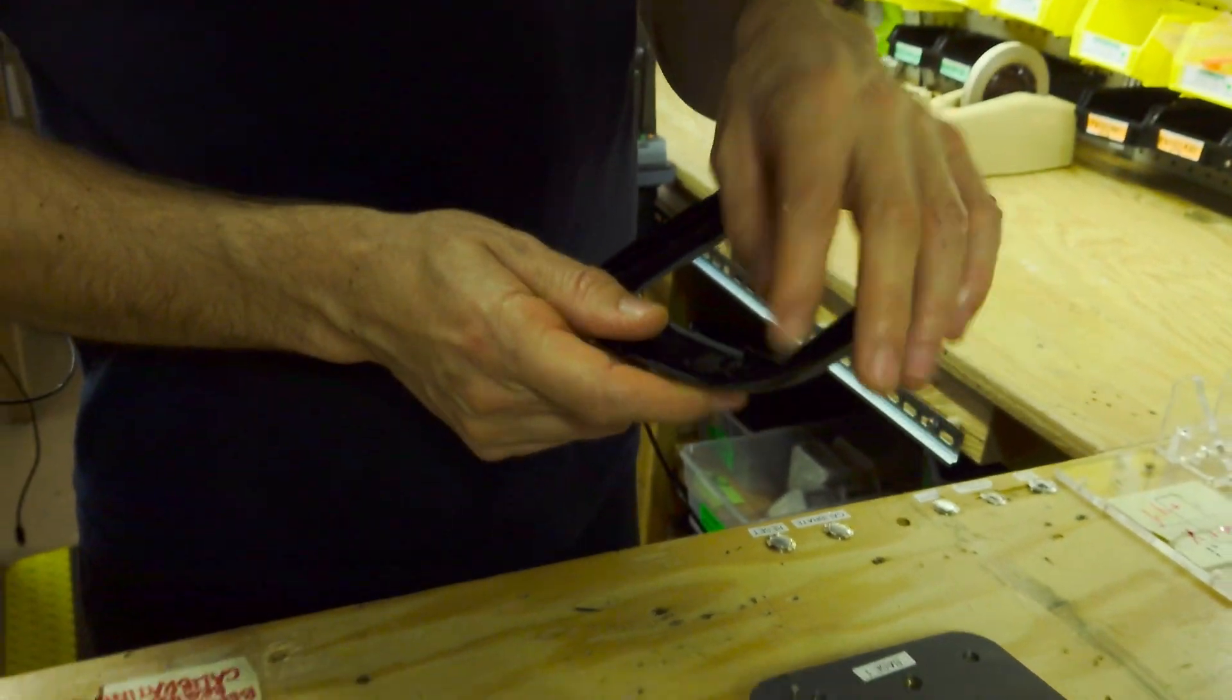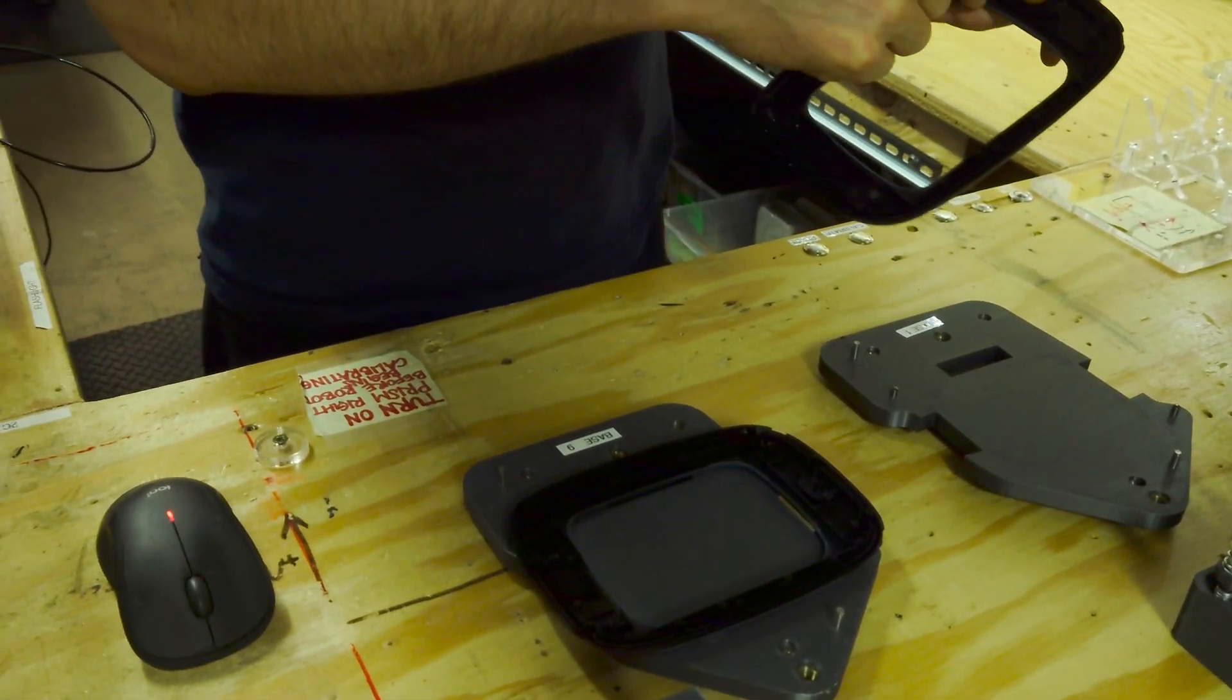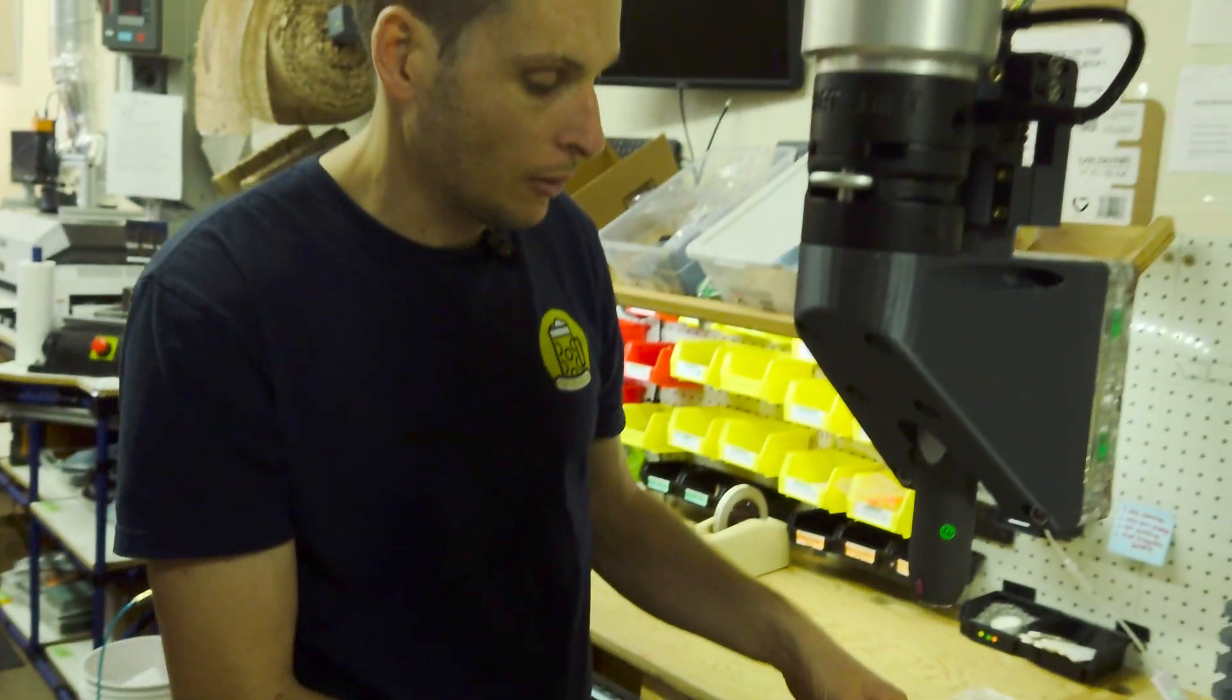But glue does not stick to it well at all. It kind of has a slippery finish. And so this Corona treater blows ionized air on there to break up the polymer chains, and it makes the glue stick really well to the plastic.